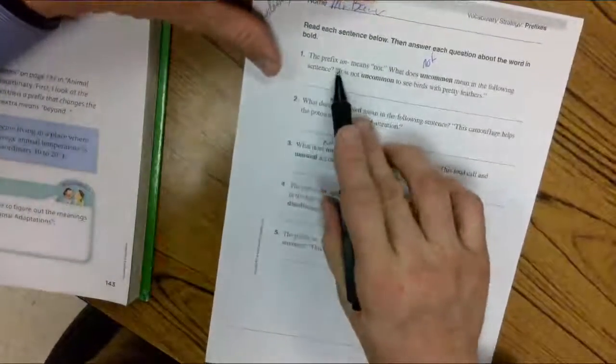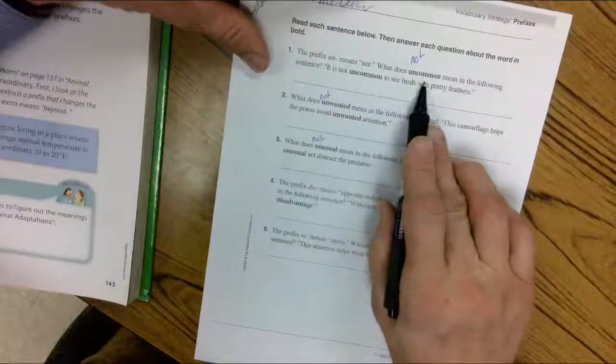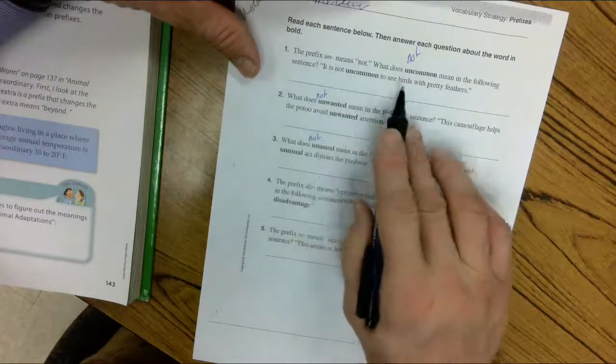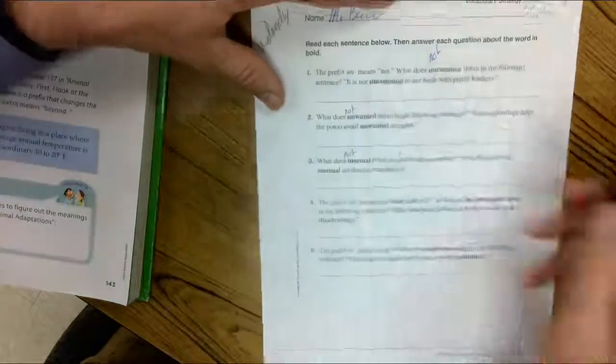The prefix un means not. What does uncommon mean in the following sentence? It is not uncommon to see birds with pretty feathers.